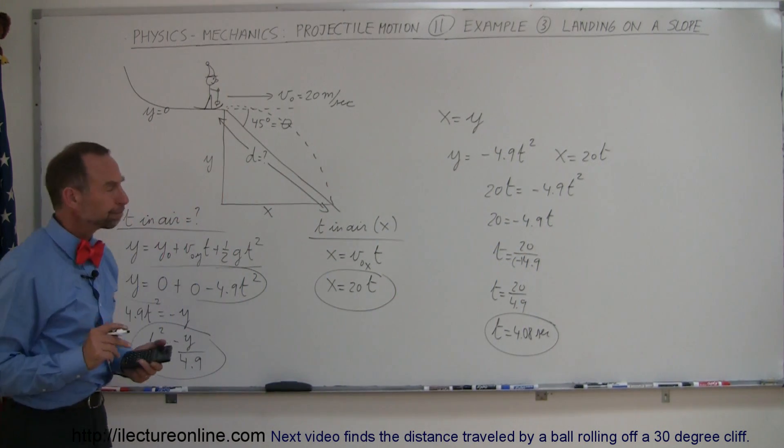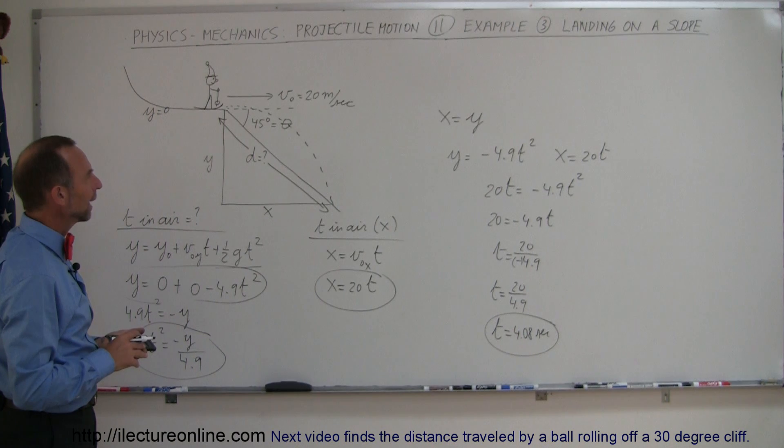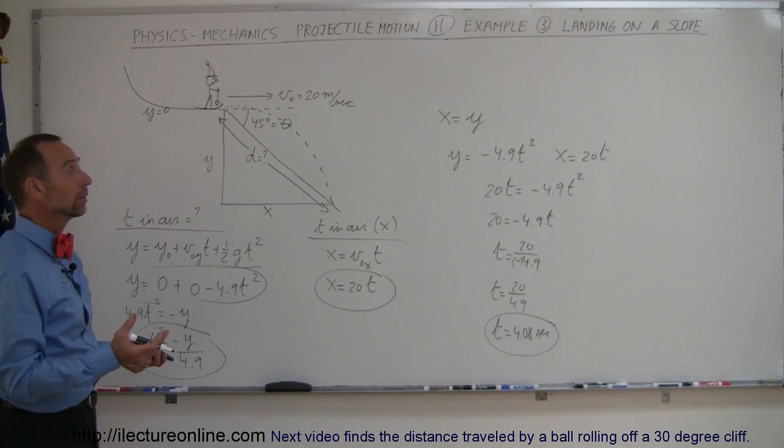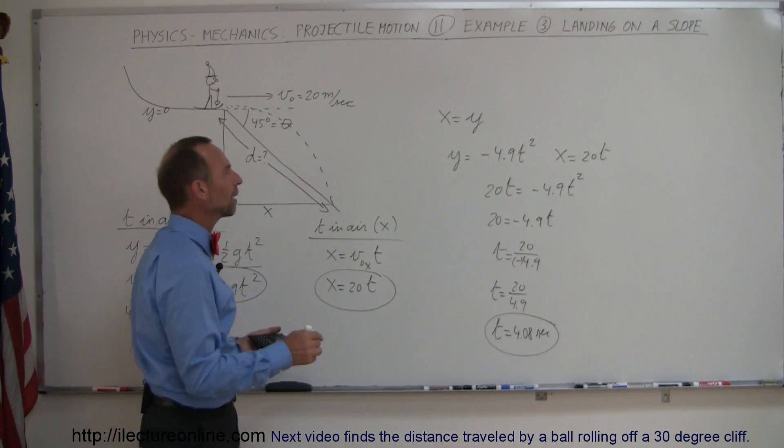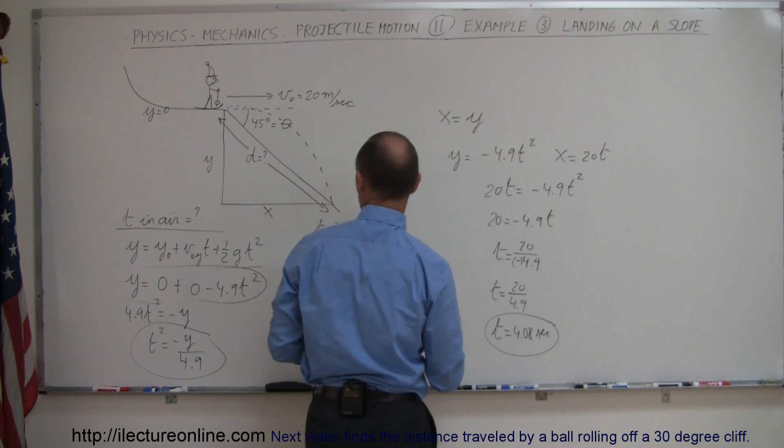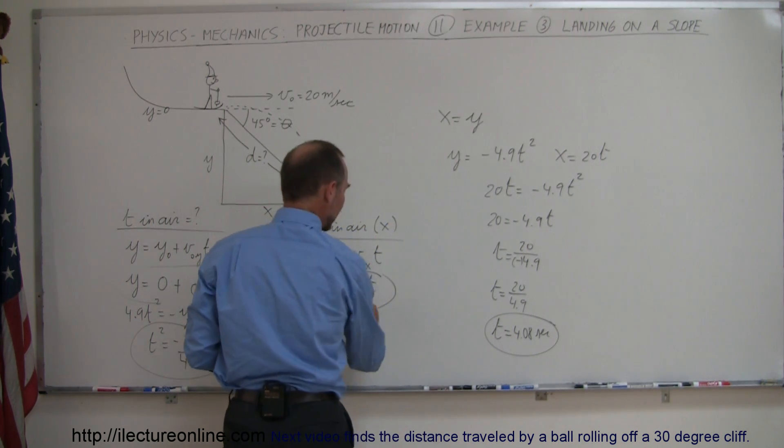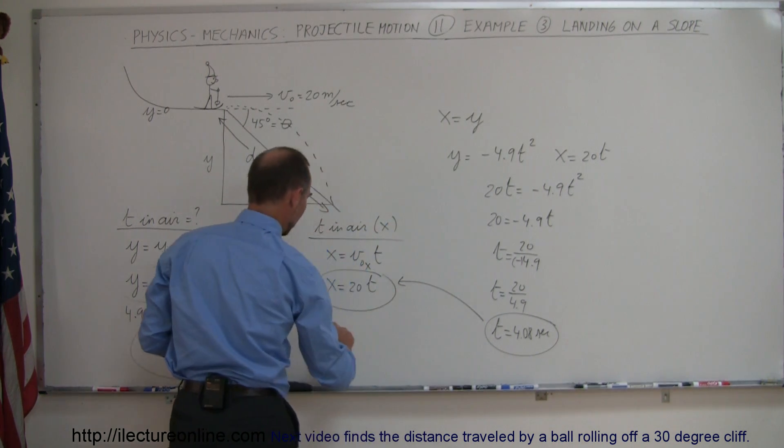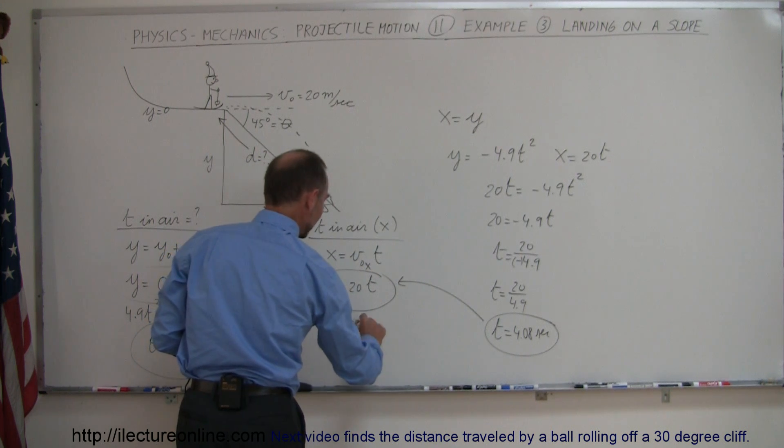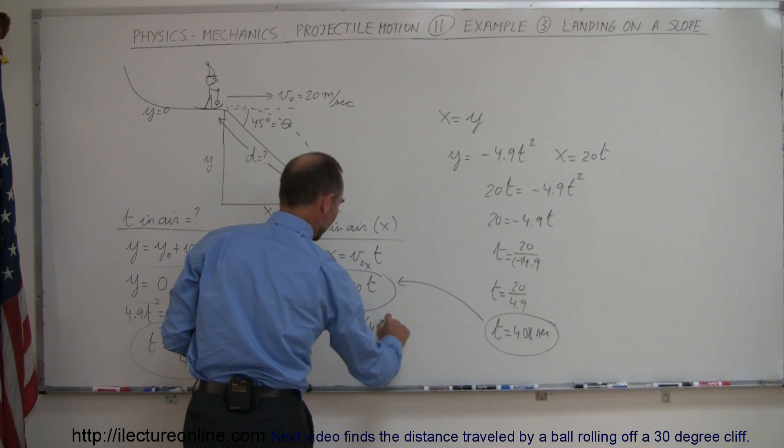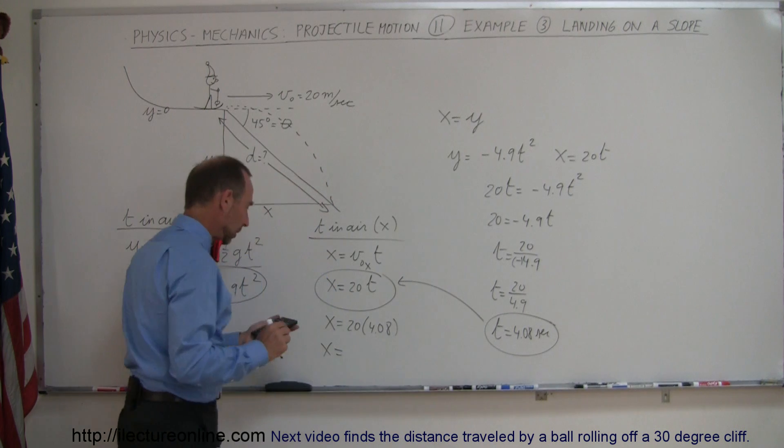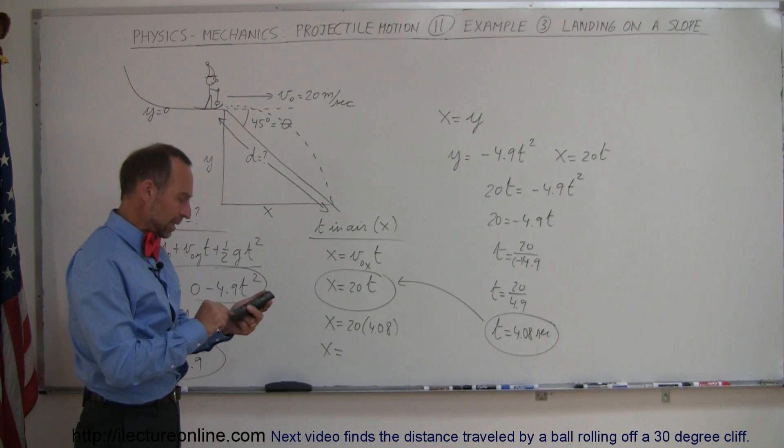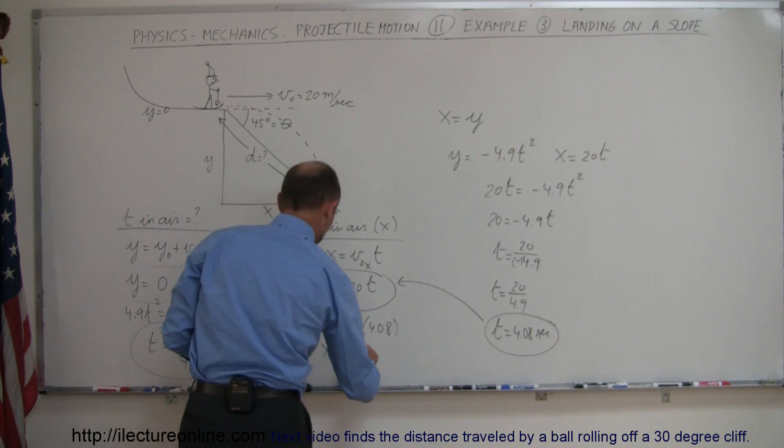All right, now that we know that, we can go ahead and find either x or y. x would be easier because we have a steady velocity in the x direction, so then go ahead, plug that in here. We can say that x is equal to 20 times 4.08, and so times 20, we get 81.6 meters.